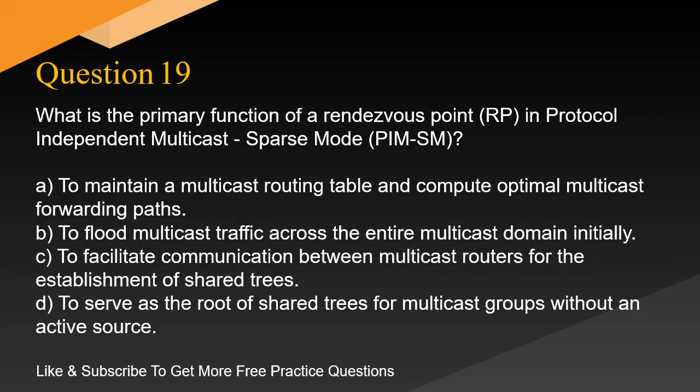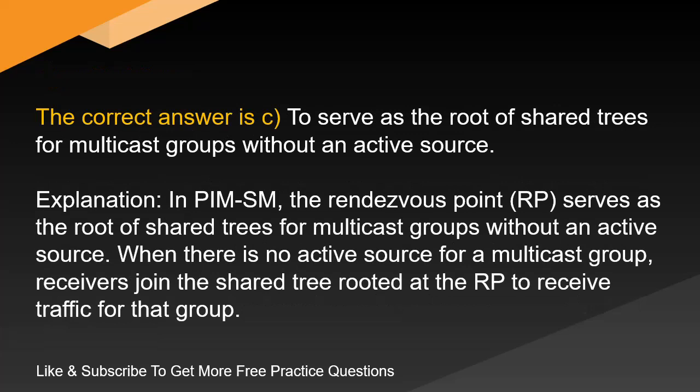Question 19. What is the primary function of a rendezvous point, RP, in Protocol-Independent Multicast Sparse Mode, PIM-SM? A. To maintain a multicast routing table and compute optimal multicast forwarding paths. B. To flood multicast traffic across the entire multicast domain initially. C. To facilitate communication between multicast routers for the establishment of shared trees. D. To serve as the root of shared trees for multicast groups without an active source. The correct answer is D: to serve as the root of shared trees for multicast groups without an active source. In PIM-SM, the rendezvous point, RP, serves as the root of shared trees for multicast groups without an active source. When there is no active source for a multicast group, receivers join the shared tree rooted at the RP to receive traffic for that group.